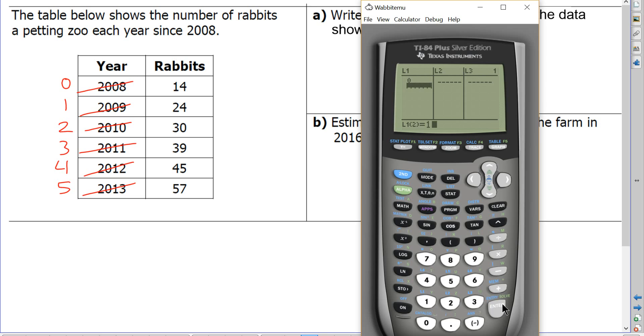So I'm going to enter zero, one, two, three, four, and five. And my Y values will be exactly as they are there in the chart. 14, 24, 30, 39, 45, and 57.